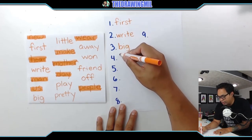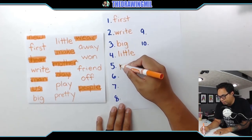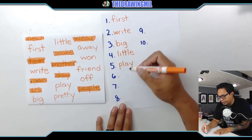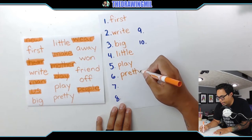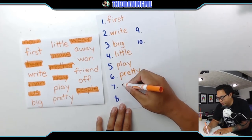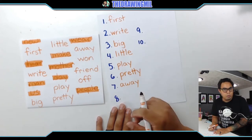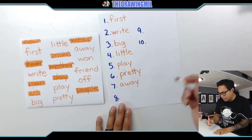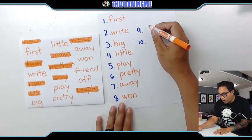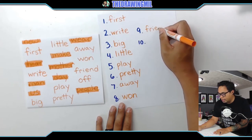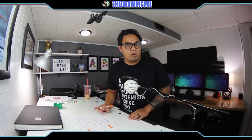Next word is the opposite of that - "little" - L-I-T-T-L-E. Next word is "play" - P-L-A-Y. Next word is "away" - A-W-A-Y. And then the next couple words are from your most recent vocab words. The first word in that week is "one" - W-O-N - like as if you want something. Next word is "friend" - F-R-I-E-N-D. And next one is "off".